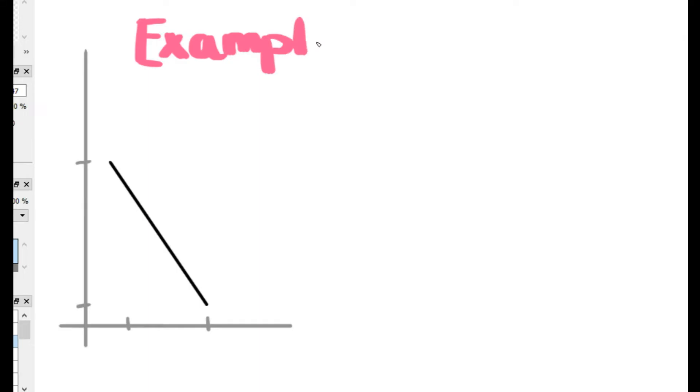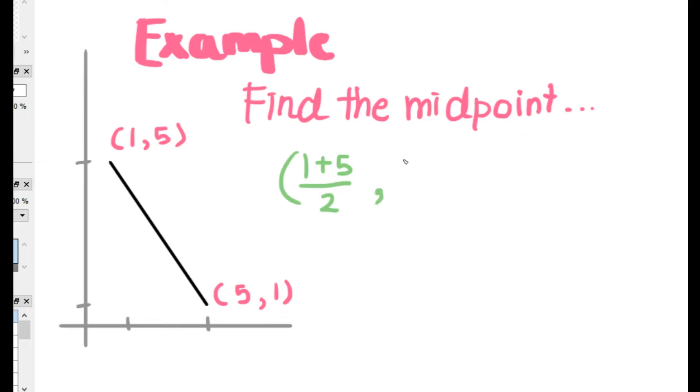For this example, one point is (1,5) and another point is (5,1). So here they asked to find the midpoint, which is 1 plus 5 over 2 and 5 plus 1 over 2, which ends up being, both of them end up being 3.